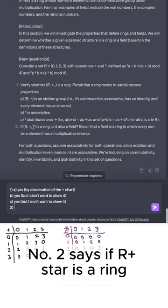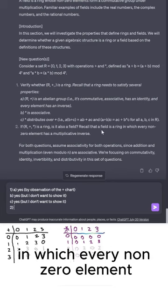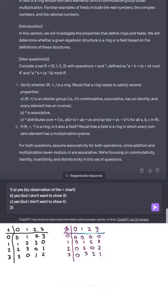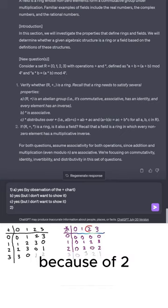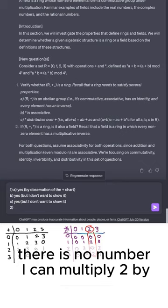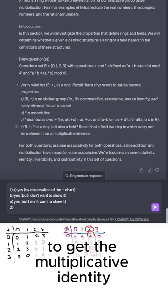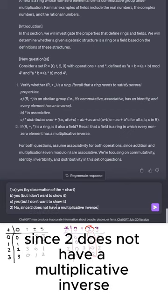Number 2 says if R plus star is a ring, is it also a field? Recall that a field is a ring in which every non-zero element has a multiplicative inverse. Well, the answer is no because of 2. 2 has no multiplicative inverse. There is no number I can multiply 2 by to get the multiplicative identity, which is supposed to be 1. So we'll say no, since 2 does not have a multiplicative inverse.